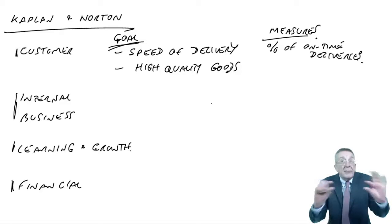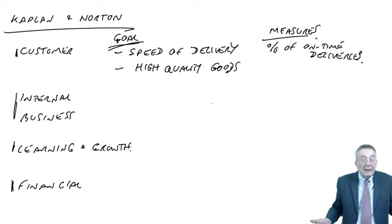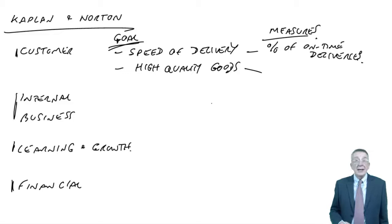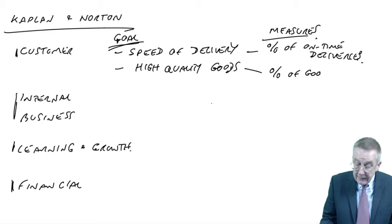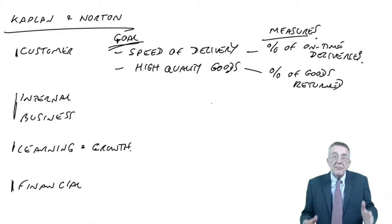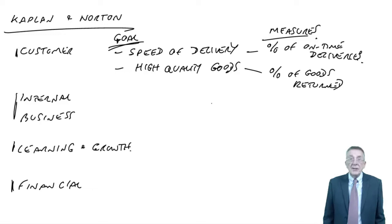Then we have to decide how we're going to measure whether or not we're giving customers what they want. If speed of delivery was a crucial thing, then one possible measure is the percentage of on-time deliveries — that's certainly relevant and something worth measuring. You can also measure quality, and it's your job in the exam to look at the information given and decide what measures might be relevant.